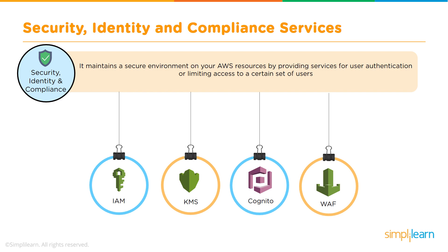KMS, or Key Management Service, is a managed service that makes it easy to create and control the encryption keys used to encrypt our data. Cognito lets us add user sign-up, sign-in, and access control to web and mobile apps quickly and easily. WAF, or Web Application Firewall, helps protect web applications from common web exploits that could affect application availability, compromise security, or consume excessive resources. WAF gives us control over which traffic to allow or block by defining customizable web security rules — including blocking SQL injections or cross-site scripting.